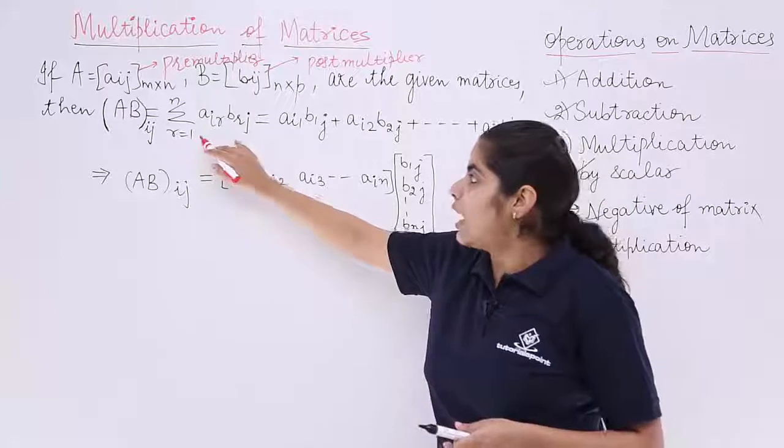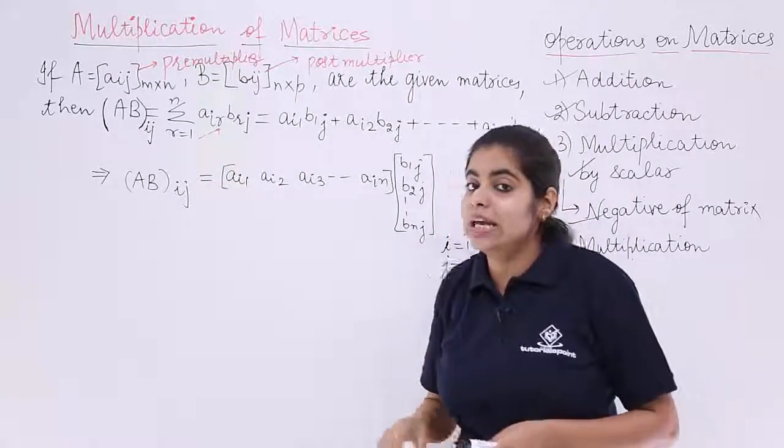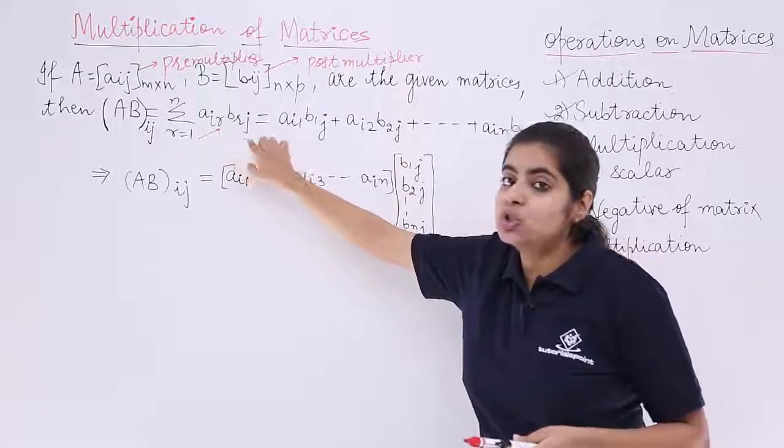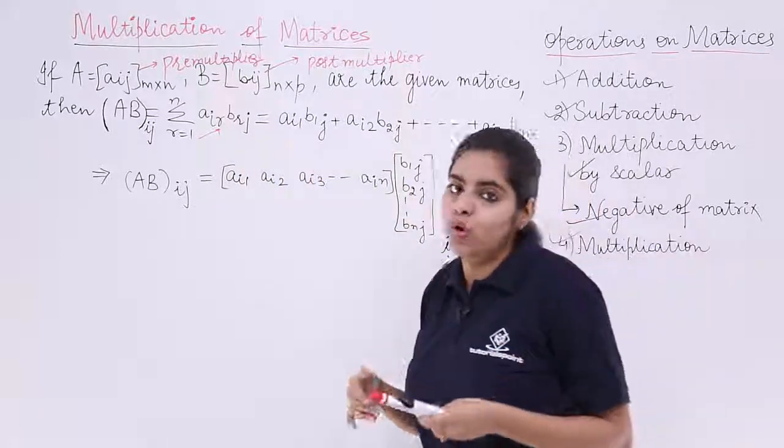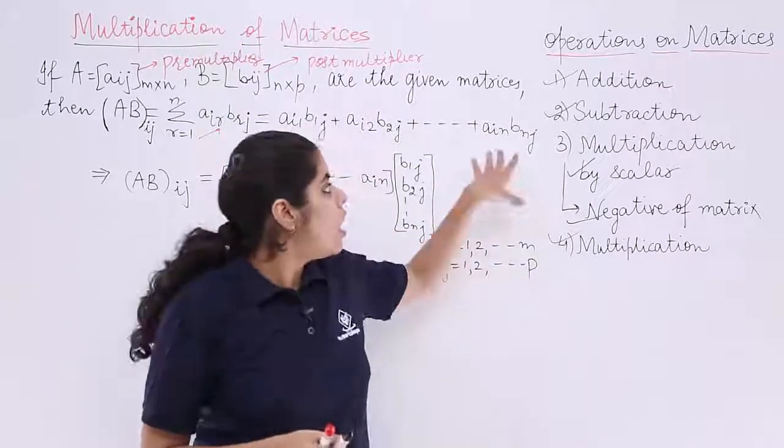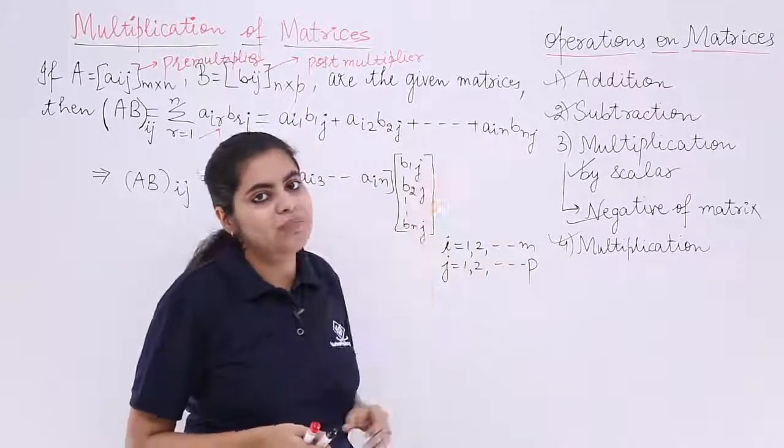Put the value of R as 1 first. So it is AI1, B1J. Then R will be 2, so AI2, B2J and so on. Till what? Till the last element when N is equal to R, that means AIN, BNJ.